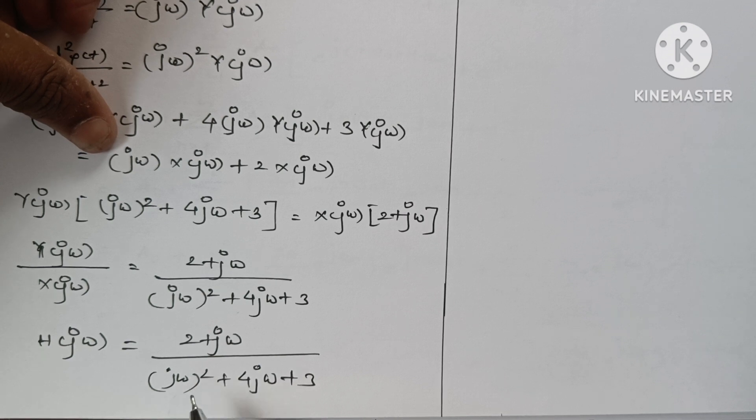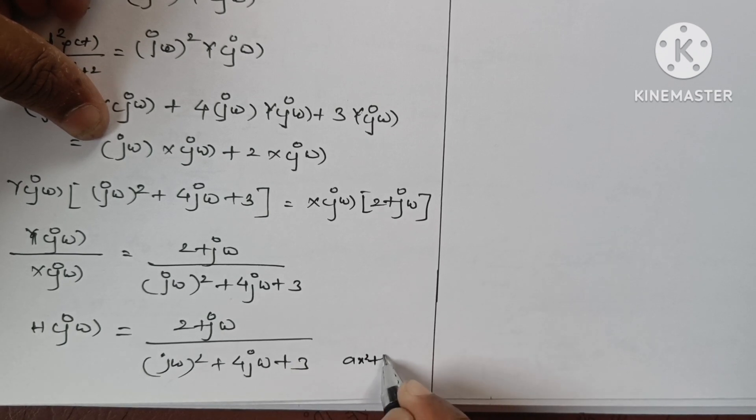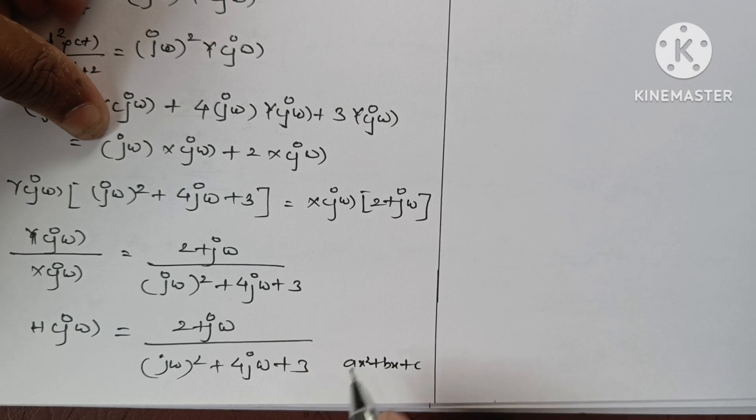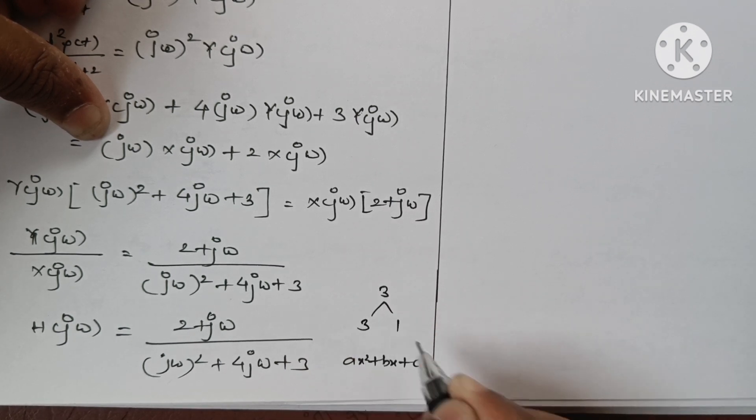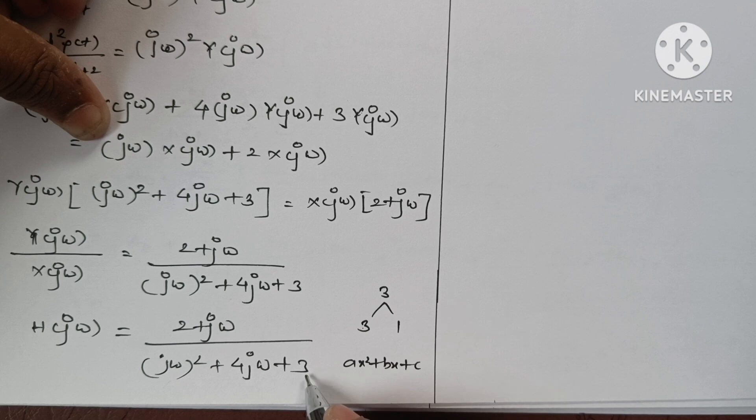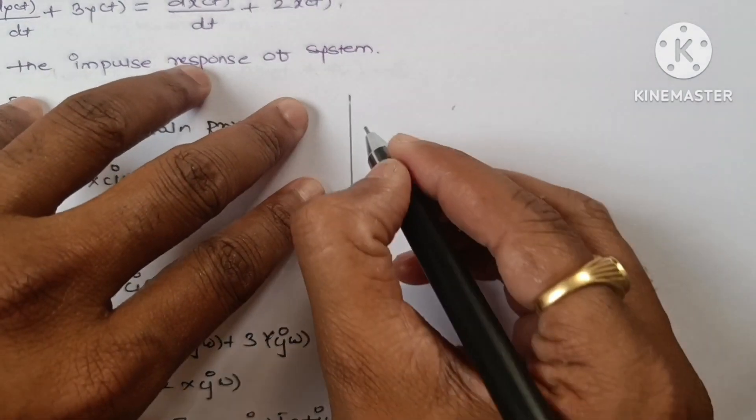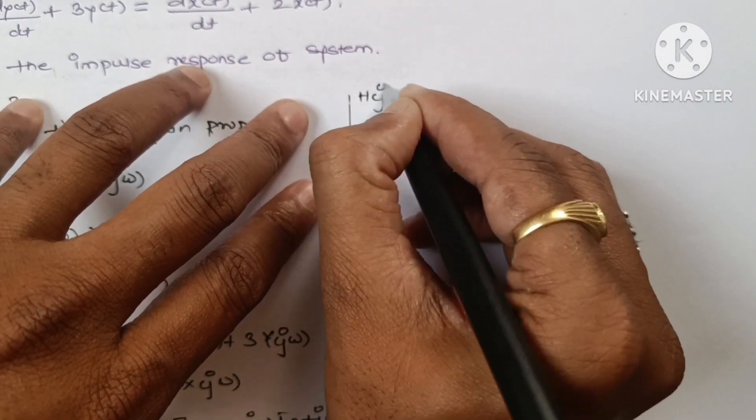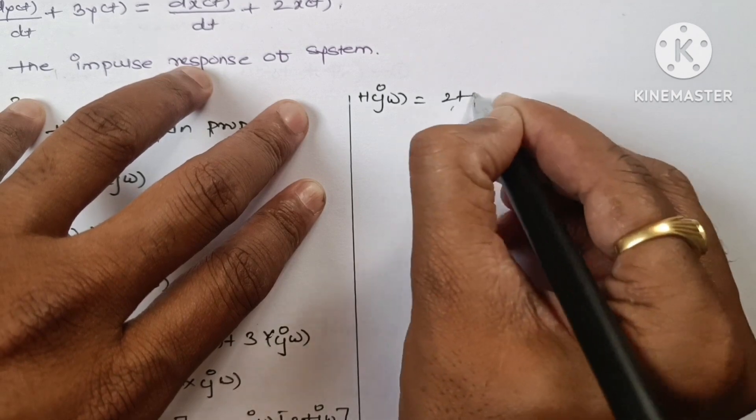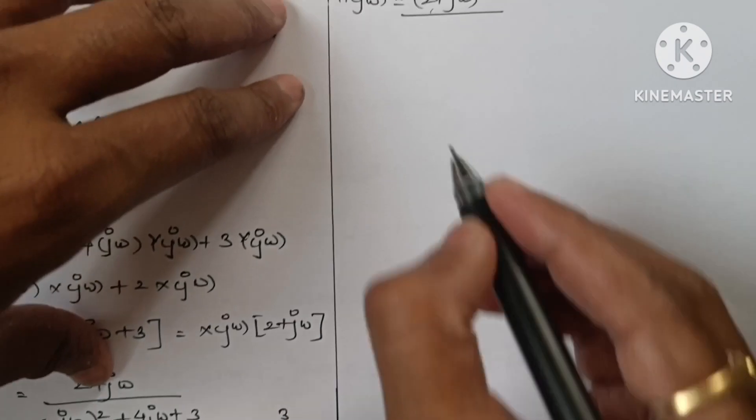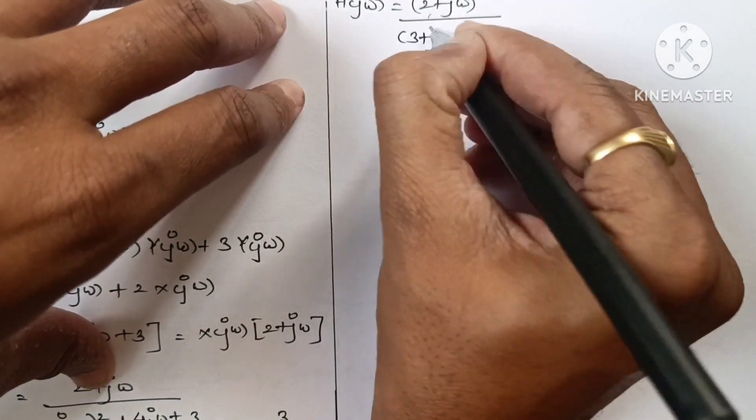It is given in form of a quadratic equation ax² + bx + c. We can factorize: 3 into 1 is 3 and 3 plus 1 is 4. So we can write in factorized form as h(jω) = (2 + jω)/[(3 + jω)(1 + jω)].